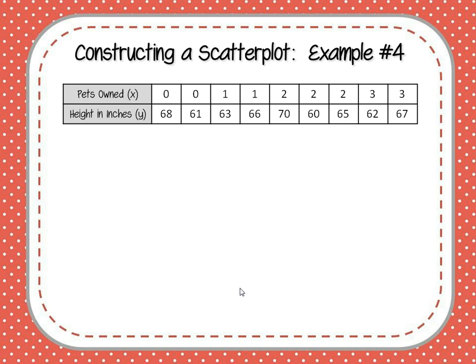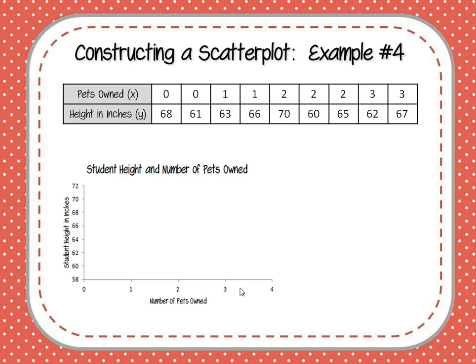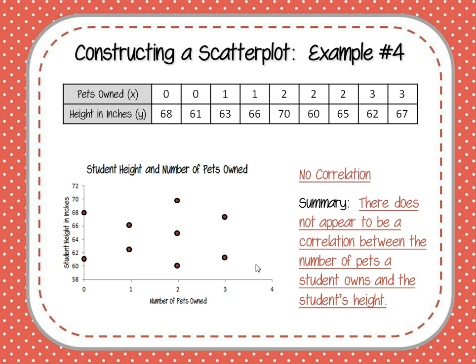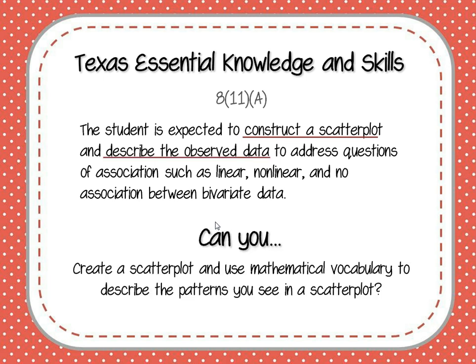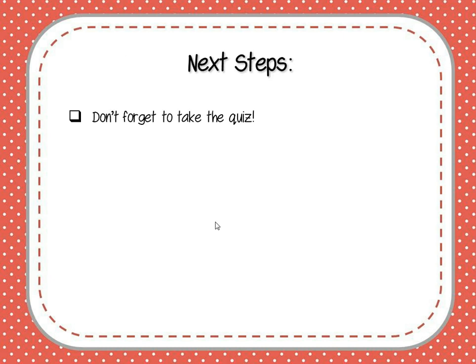For our next example, we have the number of pets owned and the height of a student in inches. As you might expect, there's really no relationship between the number of pets you own and how tall you grow, and our graph is definitely showing that — there does not appear to be a relationship, and our dots aren't moving in any particular direction. We couldn't use any of our vocabulary to describe this — this is an example of no correlation. So you survived! I hope you can construct a scatterplot and describe it. Be sure to take the quiz and keep up with your notes. See you next time!